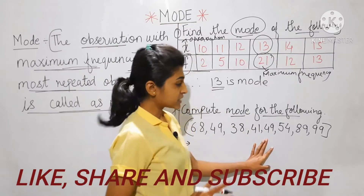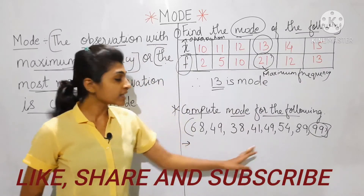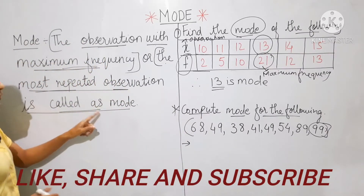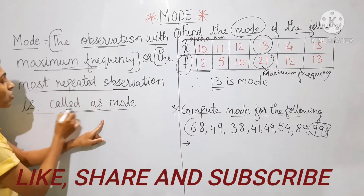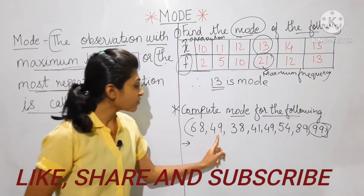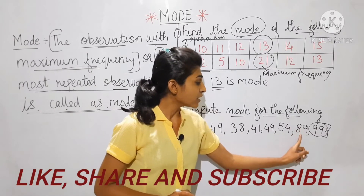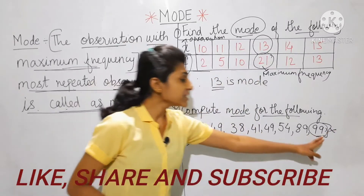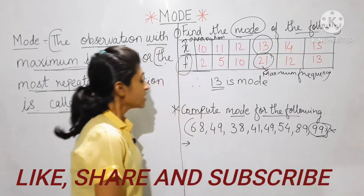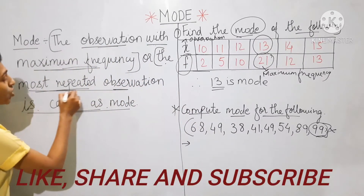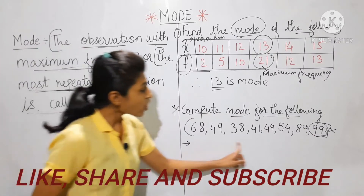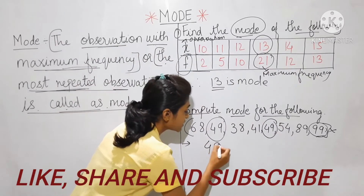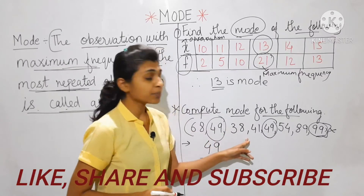Many students think mode means the largest number, but that is wrong. As per the definition, the most repeated observation is called mode. In this data — 68, 49, 38, 41, 49, 54, 89, and 99 — many students would select 99, but 99 is wrong. Though it is the largest number, it is not the mode. The observation which is repeated the most is the mode. Here, 49 is repeating 2 times, so the mode is 49.